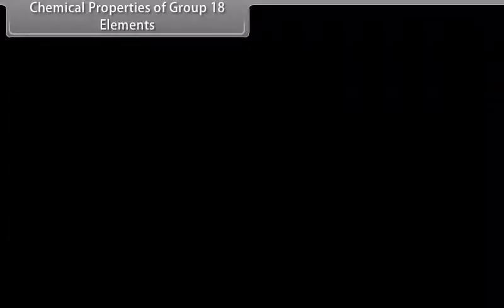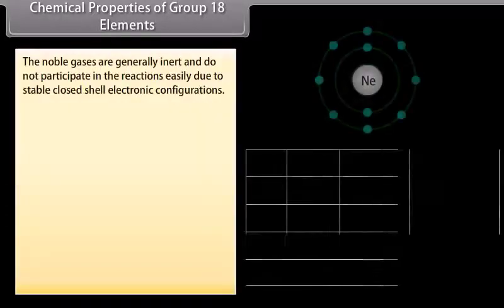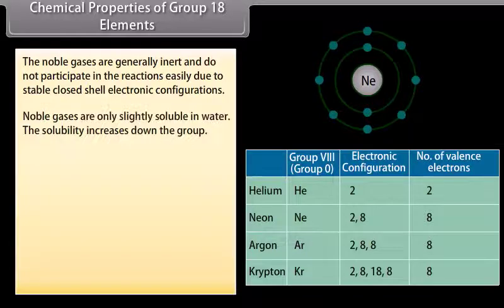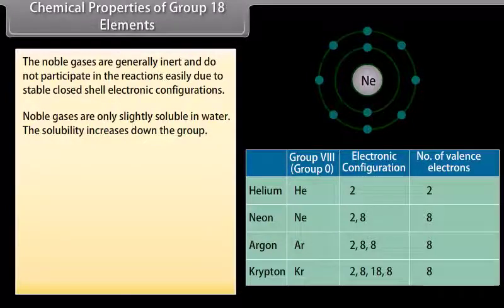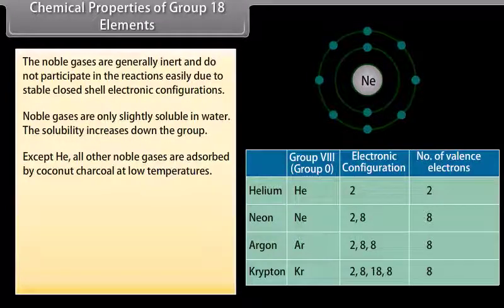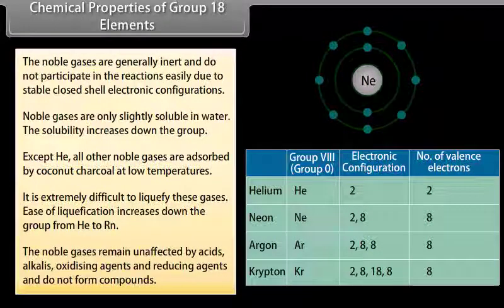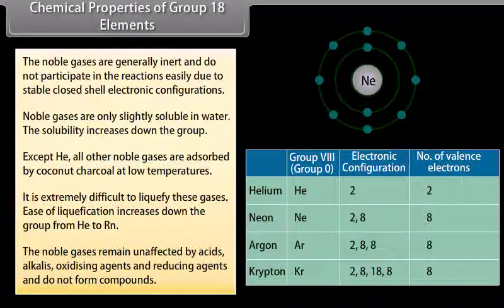Chemical properties of Group 18 elements: Noble gases are generally inert and do not participate in reactions easily due to stable closed-shell electronic configurations. Noble gases are only slightly soluble in water; solubility increases down the group. Except helium, all other noble gases are absorbed by coconut charcoal at low temperatures. It is extremely difficult to liquefy these gases; ease of liquefaction increases down the group from helium to radon. The noble gases remain unaffected by acids, alkalies, oxidizing agents and reducing agents, and do not form compounds.